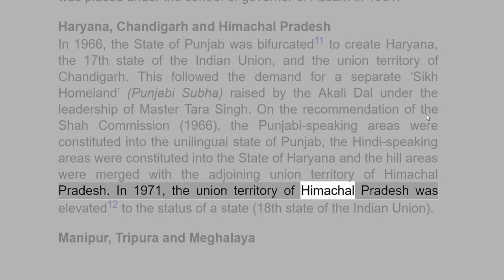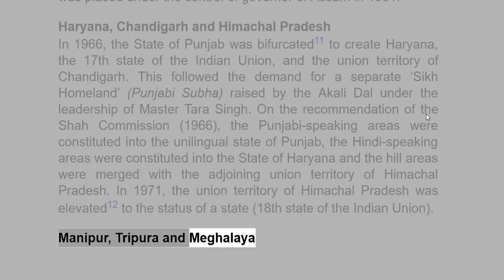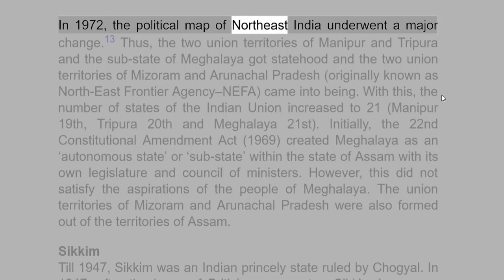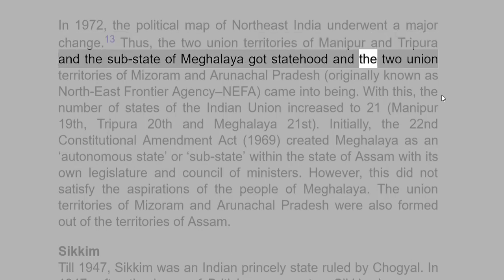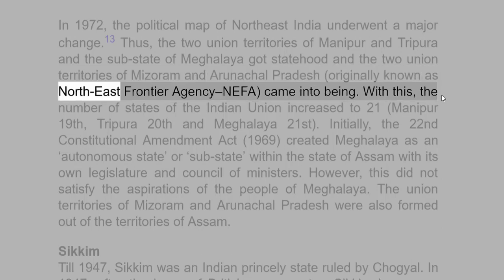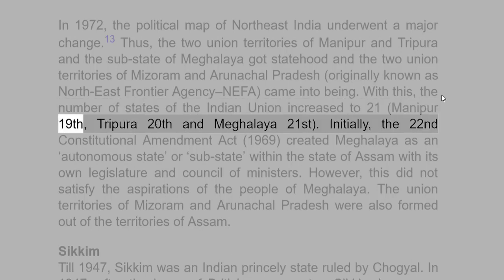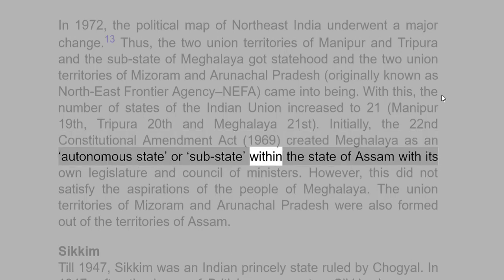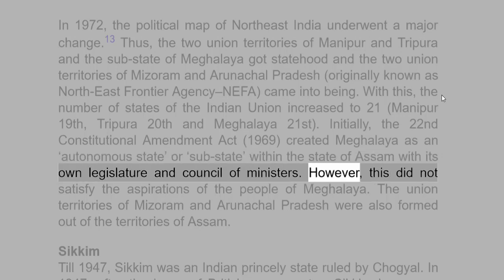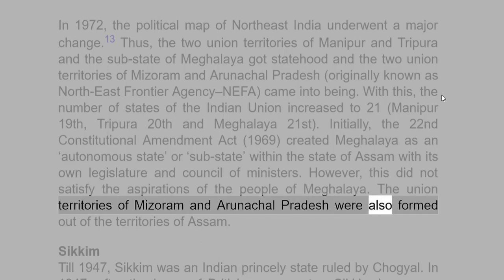In 1971, the Union Territory of Himachal Pradesh was elevated to the status of a state, the 18th state of the Indian Union. In 1972, the political map of Northeast India underwent a major change: the two Union Territories of Manipur and Tripura and the sub-state of Meghalaya got statehood, and the two Union Territories of Mizoram and Arunachal Pradesh — originally known as Northeast Frontier Agency — came into being. The number of states increased to 21: Manipur (19th), Tripura (20th) and Meghalaya (21st). The 22nd Constitutional Amendment Act, 1969, had initially created Meghalaya as an autonomous state within the state of Assam with its own legislature and council of ministers, but this did not fully satisfy the aspirations of the people.